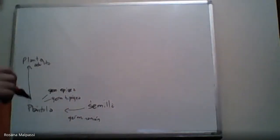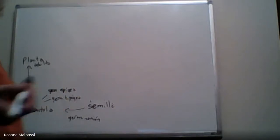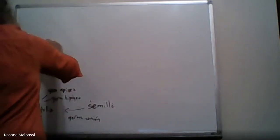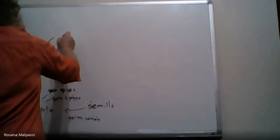Si esto es una planta adulta y ya hoy medio como que la dibujamos, significa que ya desarrolló sus estructuras reproductivas, o sea que desarrolló la flor.